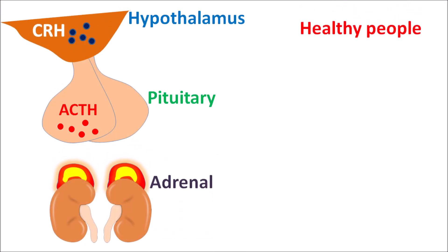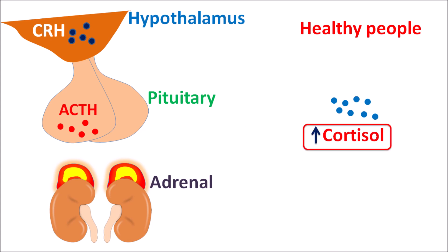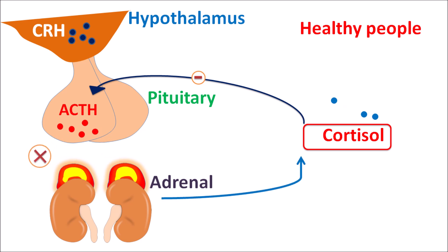In healthy people, the HPA axis works normally. Cortisol levels can control this HPA axis — when cortisol levels are elevated, it produces a negative feedback mechanism on both the hypothalamus and the pituitary. Cortisol inhibits the release of ACTH so that ACTH is not excessively released, which results in decreased cortisol levels. In this way, cortisol within the systemic circulation produces a negative feedback mechanism on the HPA axis.